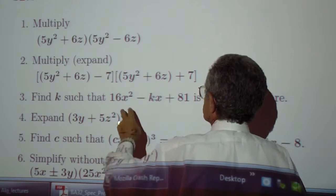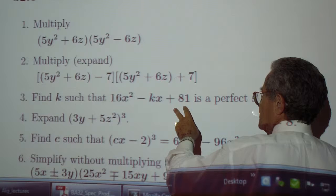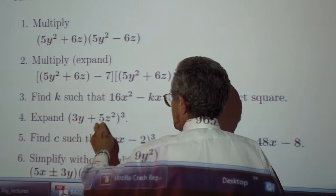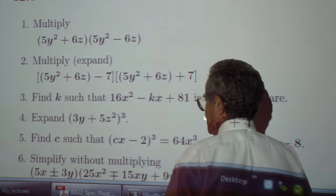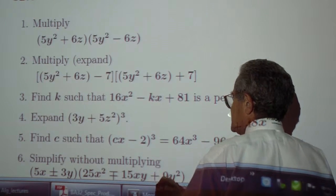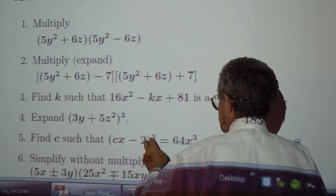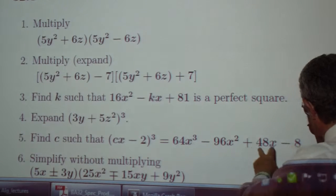Exercise 3, find k such that this is a perfect square. Exercise 4, expand 3y plus 5z squared to the power 3. Exercise 5, find c such that cx minus 2 expands like so.